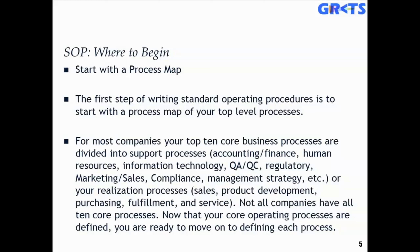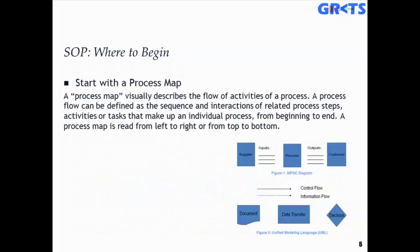Your realization processes could include sales, contract review, contract management, product development, R&D, and purchasing fulfillment. Now that you have your core operating processes defined, you're ready to move on to defining each process. The process map visually describes the flow of activities. The flow can be defined as a sequence and interactions of related process steps, activities, tasks, or sub-tasks that make up an individual process — from pre to post, beginning to end, or as we call it, cradle to grave. A process map is read from left to right or from top to bottom, providing a visual depiction — the GPS, the roadmap.